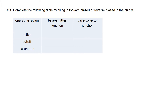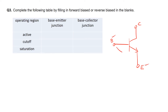To answer this question, we have to first draw the schematic symbol of the transistor. The transistor consists of three terminals, namely the base, collector, as well as emitter. What does it mean by base-emitter junction? It means that within base-to-emitter, this is called the BE junction, or base-emitter junction for short.